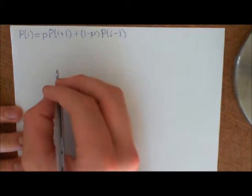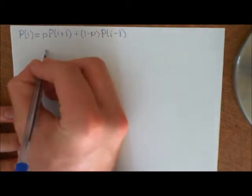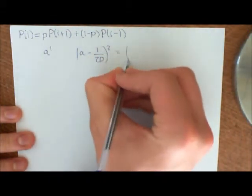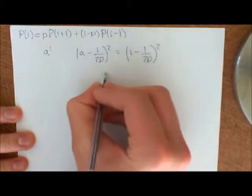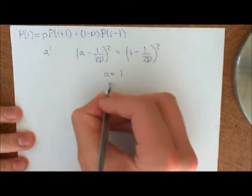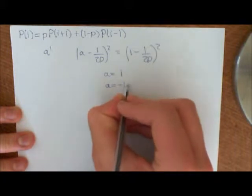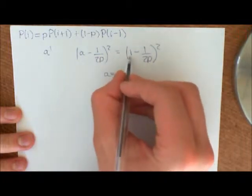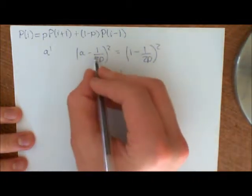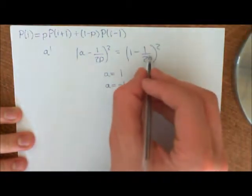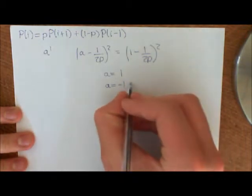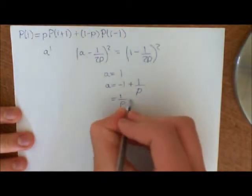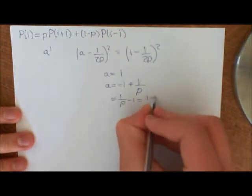So we showed that the solutions were of the form A^i, where A satisfied the equation (A - 1/2P)^2 is equal to (1 - 1/2P), and we saw that this implied that A was either equal to 1 or A was equal to... basically square root both sides, and if you get the positive here, you get that it's equal to 1. If you get the negative here, you'll get negative 1, and then you'll add on 1/2P to this side, and you'll get two lots of 1/2P, so that will give you plus 1/P. So we get 1/P - 1, which we could rewrite as (1-P)/P.